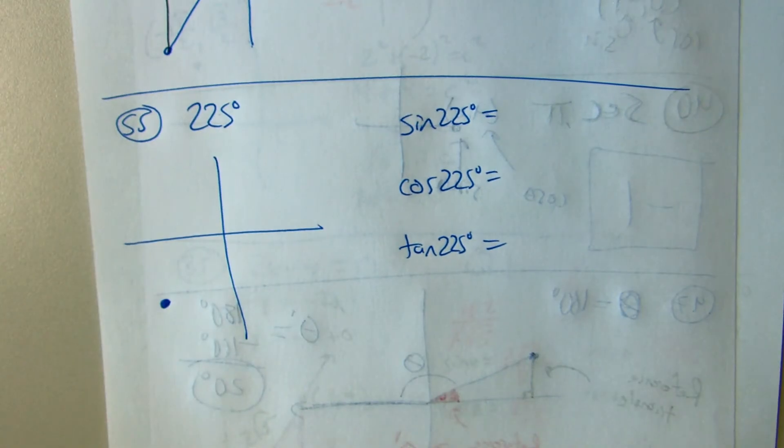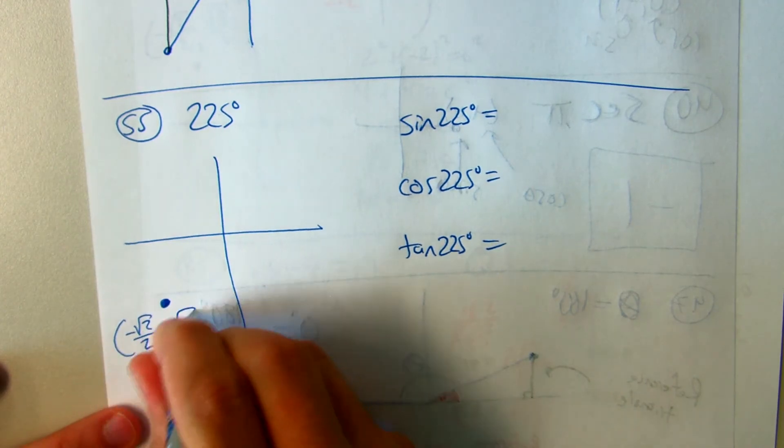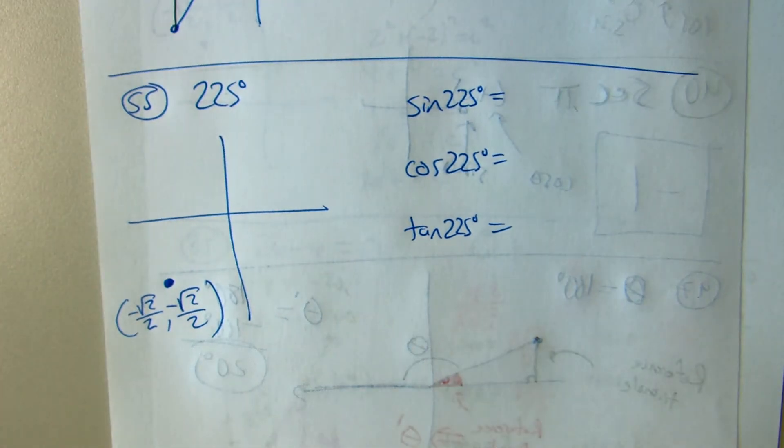You have to know the point at 225. Since it's in the middle, both coordinates are square root 2 over 2. Since it's in quadrant 3, both are negative.